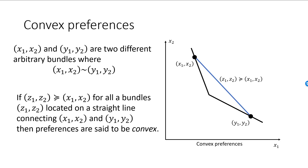Convex preferences is, in a sense, quite natural. Say that the consumer is facing the following two bundles: bundle 1 has seven glasses of milk and one cookie, while bundle 2 has one glass of milk and seven cookies. Most consumers would then prefer a mix of these two bundles, such as 50% of the first bundle and 50% of the second, resulting in four glasses of milk and four cookies.